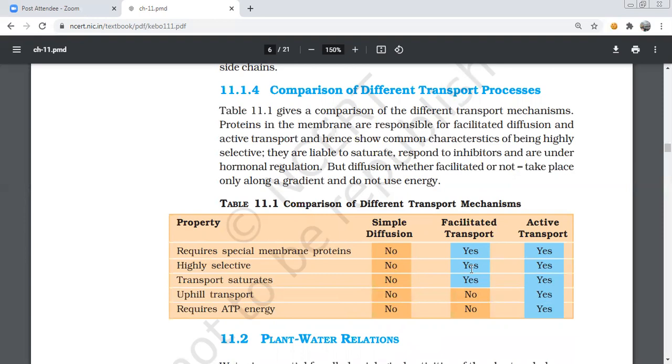Membrane channels and protein channels make it selective - only certain substances can pass through those channels. Transport saturation: does transport saturate? It saturates in facilitated and active transport up to a certain limit.